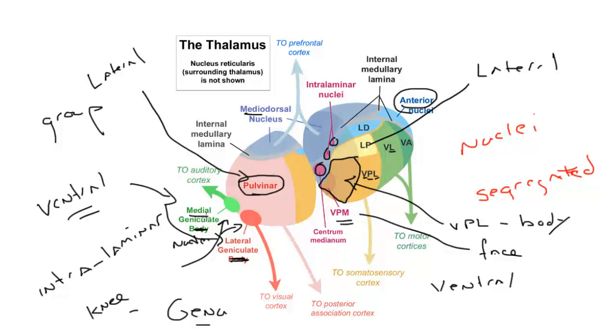The medial geniculate nucleus is the auditory relay nucleus. It gets input from the inferior colliculus, which is an obligatory synapse for all auditory brainstem inputs. The inferior colliculus sends axons to the medial geniculate, which then sends axons to auditory cortex. What we have is a coming together of auditory information in the medial geniculate, then the packaging of that information and sending it to areas of cortex that, because they receive input from the medial geniculate, are auditory in function.